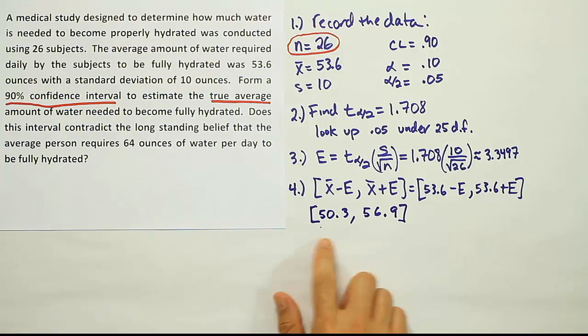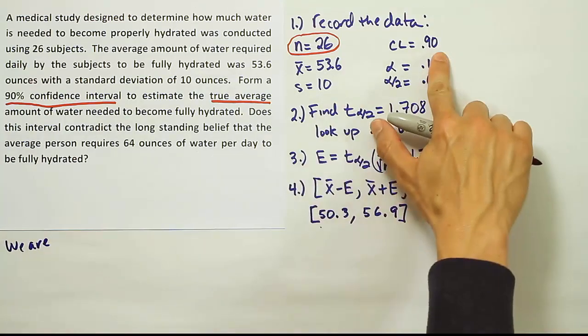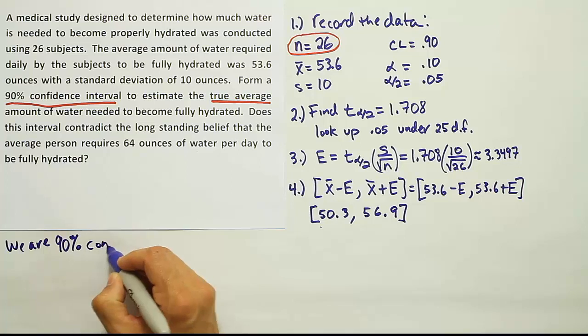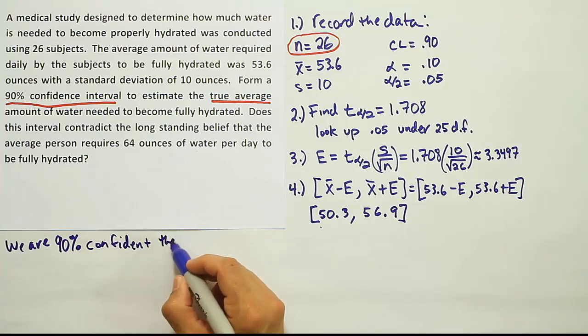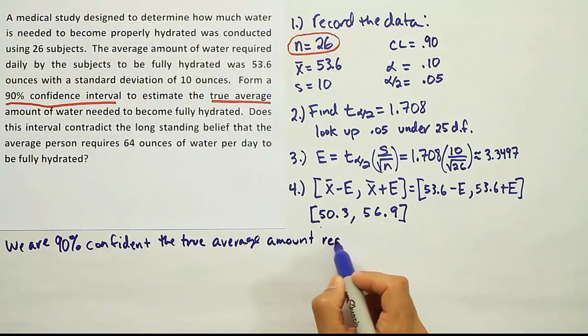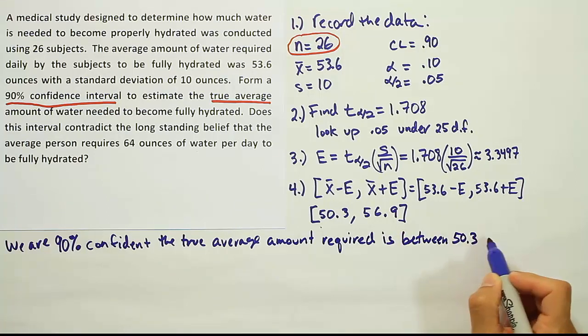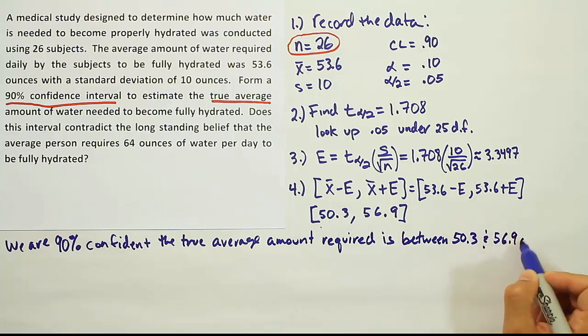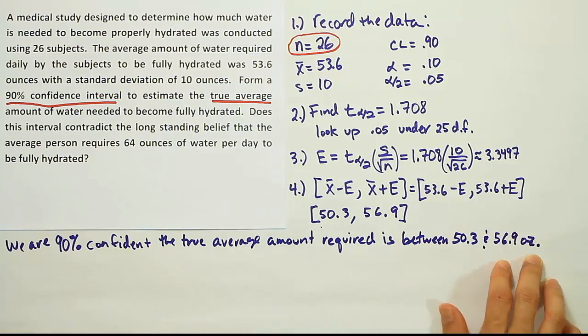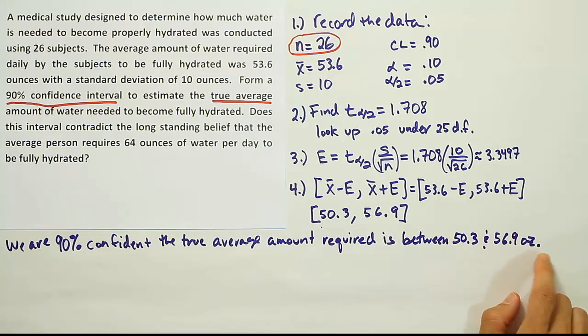Remember this problem is about water. These are the number of ounces that we think it requires, on average, to be properly hydrated. Let's word our final solution then, the way we normally do it. We are 90% confident the true average amount required is between 50.3 and 56.9 ounces. Basically this is our wording for the final step of the problem.